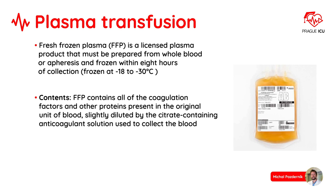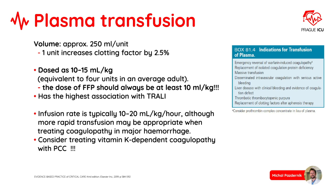Fresh Frozen Plasma is a licensed plasma product that must be prepared from whole blood or apheresis and frozen within 8 hours of collection. FFP contains all of the coagulation factors and other proteins present in the original unit of blood, slightly diluted by the citrate-containing anticoagulant solution. Plasma volume is approximately 250 milliliters per unit. One unit increases clotting factors by 2.5%. We should appropriately dose FFP at 10 to 15 milliliters per kilogram, equivalent to 4 units in an average adult.